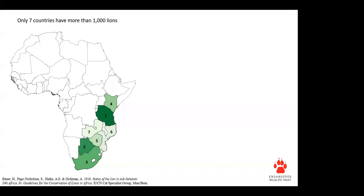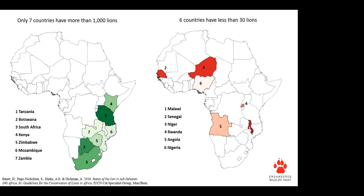Only seven countries are estimated to have more than 1,000 lions. In descending order: Tanzania, Botswana, South Africa, Kenya, Zimbabwe, Mozambique, and Zambia. Meanwhile, 51% of remaining wild lion populations have fewer than 100 lions, and six countries have less than 30 — in ascending order: Malawi, Senegal, Niger, Rwanda, Angola, and Nigeria. However, countries like Malawi and Rwanda have increasing populations through the reintroduction of lions into protected areas. For example, Akagera National Park in Rwanda reintroduced lions in 2015 after they were hunted out in the early 1990s, and within the first year the population doubled with the birth of 11 cubs.